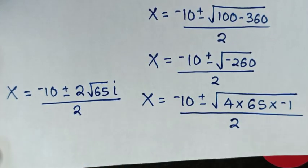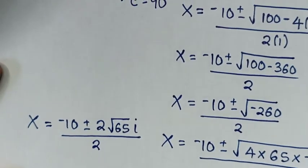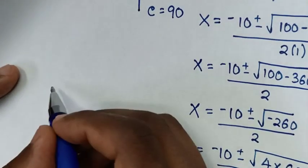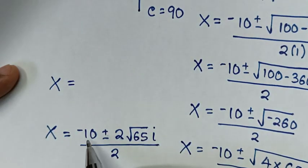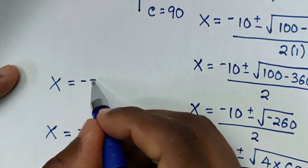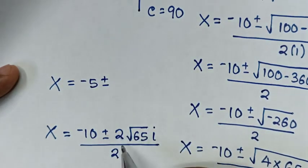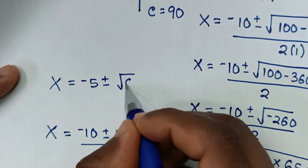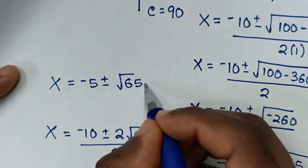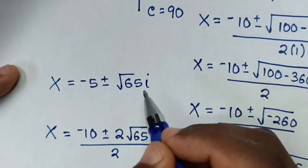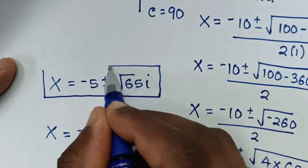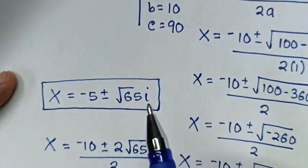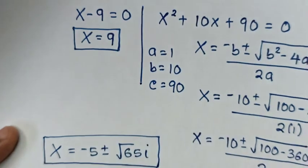Simplifying: -10/2 = -5, and the 2 cancels in the numerator, giving x = -5 ± √65 · i. This is the complex solution, and x = 9 is the real solution.